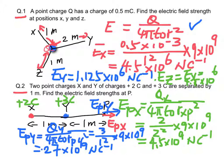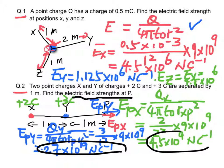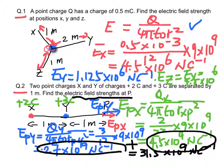Therefore, the resultant electric field strength at P is the sum of these two values, which is equal to 31.5 times 10 to the power 9 newton per coulomb, directed towards the right.